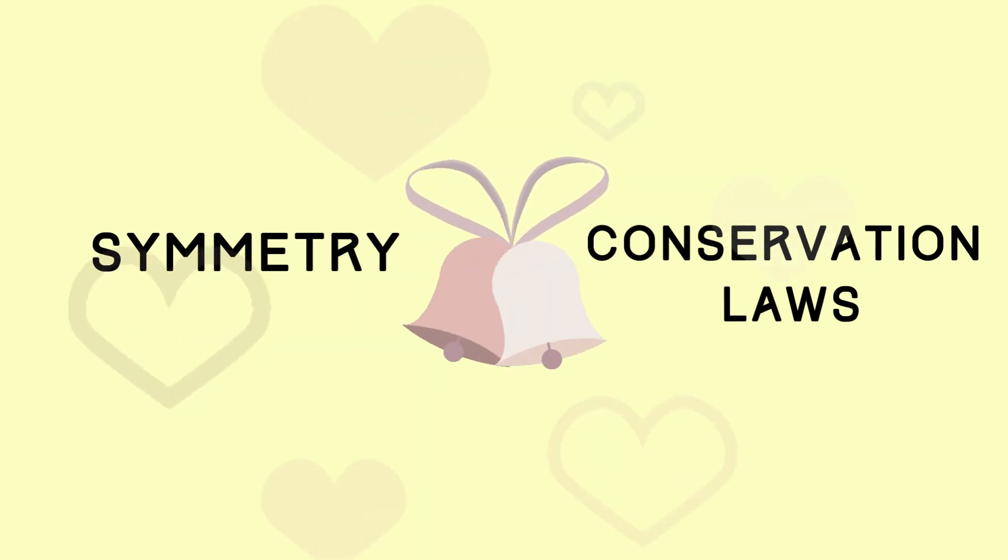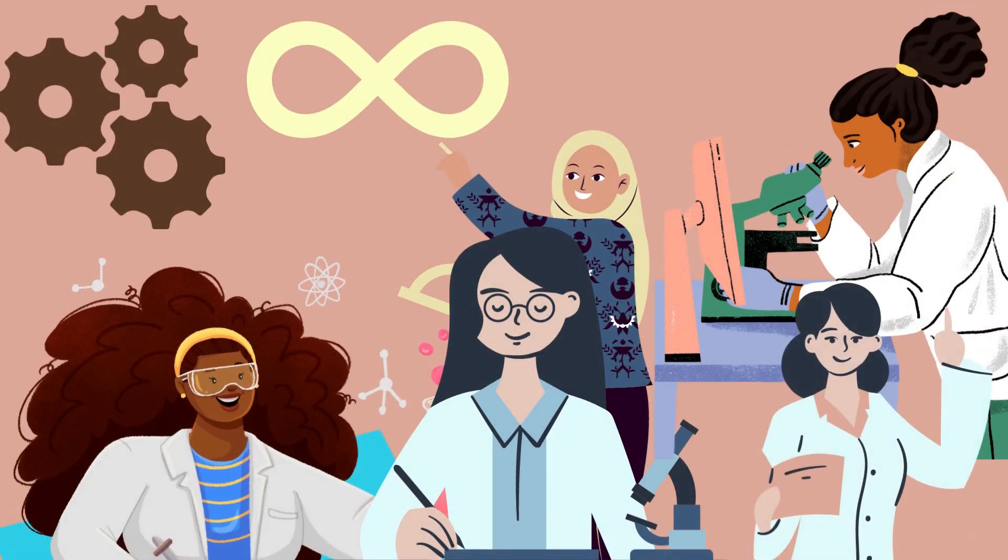Noether's theorem established a relationship between the values of symmetry and conservation laws. But what makes Emmy's discovery so significant that it continues to be felt today, particularly in physics, where scientists are still searching now for new symmetries?